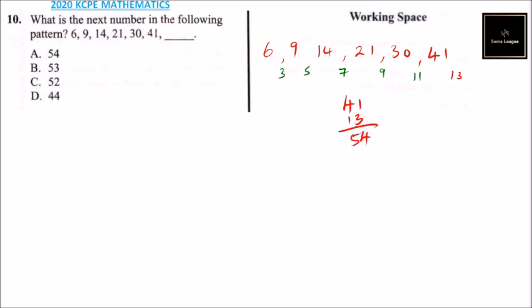And that will give you 54, so the next number here is 54 depending on the pattern, the way the pattern is being generated.